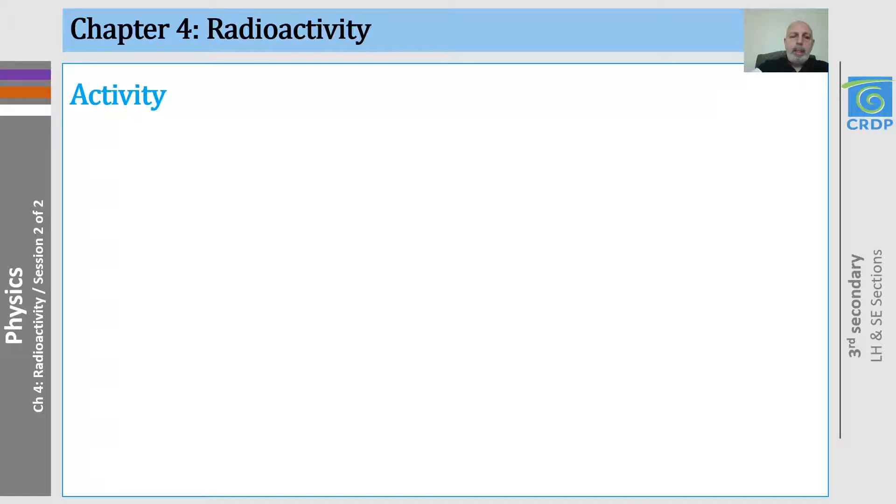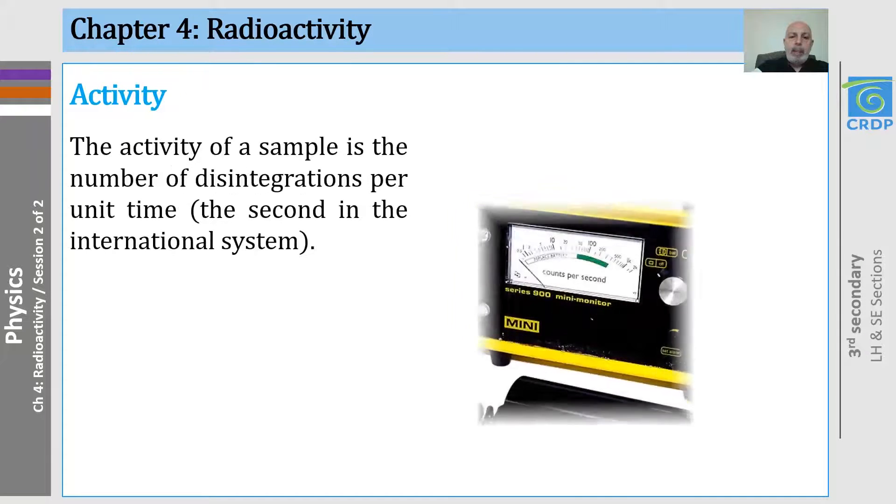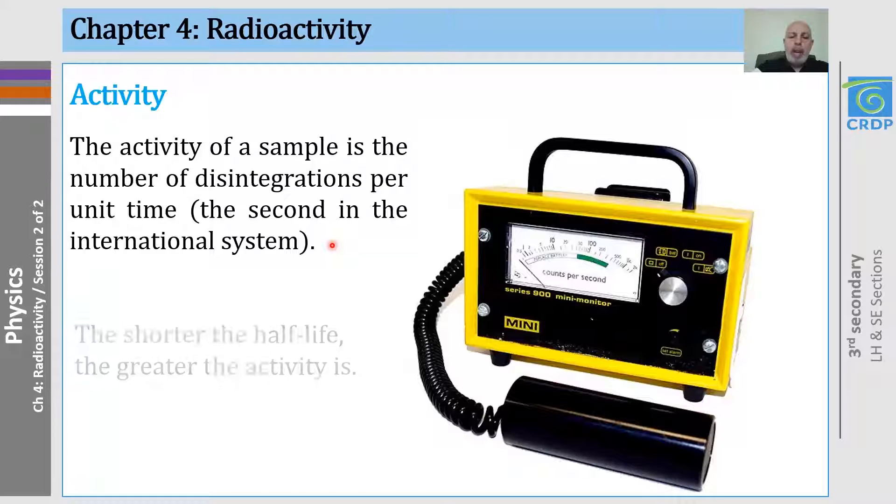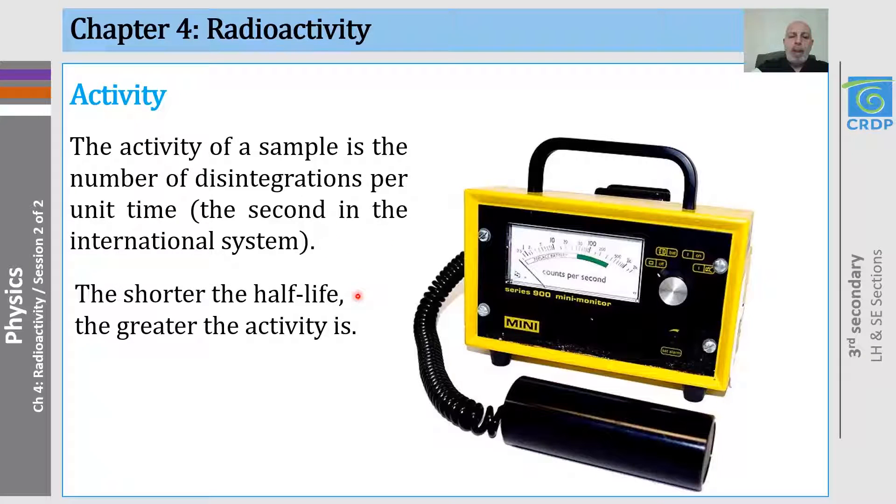Now, what about activity? What is activity? Activity is the number of disintegrations per unit time, the second in the international system of units, and the shorter the half-life, the greater the activity is. What we see here is a device that measures the activity of a sample, and it's called Geiger counter.